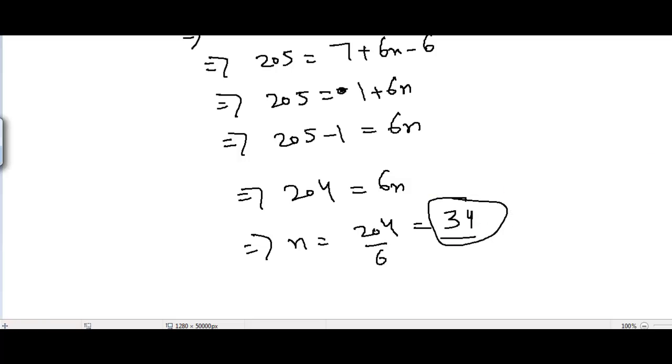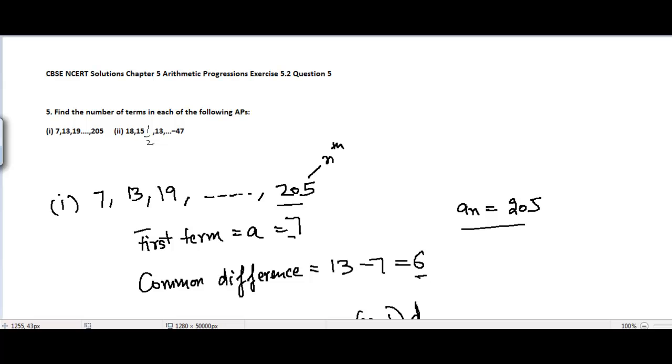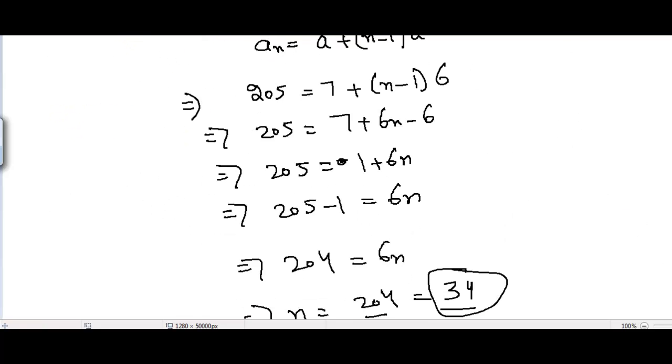So n = 34. It means that there are 34 terms in this AP. It means that this last term is present at 34th location. Hence there are 34 terms in this AP, which is part number 1. Now we can move to part number 2.